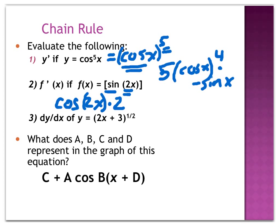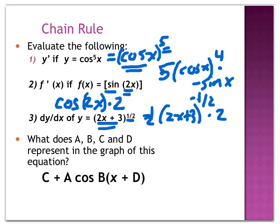Number three has an inside and outside function that doesn't involve trig. The outside function is to the half power, and the inside function is 2x plus 3. When I derive this, I derive the outside: 1/2 times, leave the inside alone — (2x plus 3) to the negative 1/2 power — times the derivative of the inside, times 2. You could simplify if you wanted to; that would give (2x plus 3) to the negative 1/2, because 2 times 1/2 cancels.